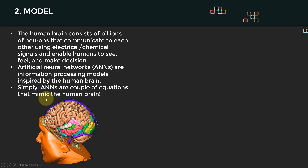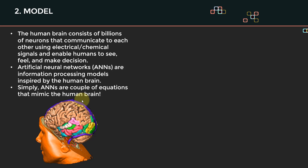What we try to do when developing AI models is to open that brain and mimic it mathematically. You will hear the term artificial neural networks, or ANN, quite frequently — these are information processing models inspired by the human brain. All artificial neural networks are is just a bunch of math, a bunch of equations that try to mimic the human brain.